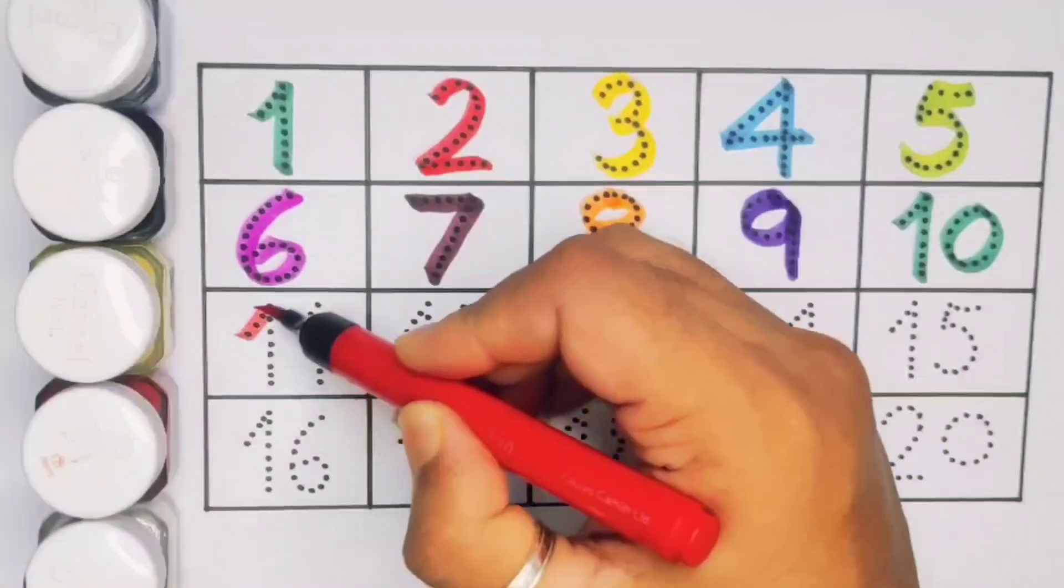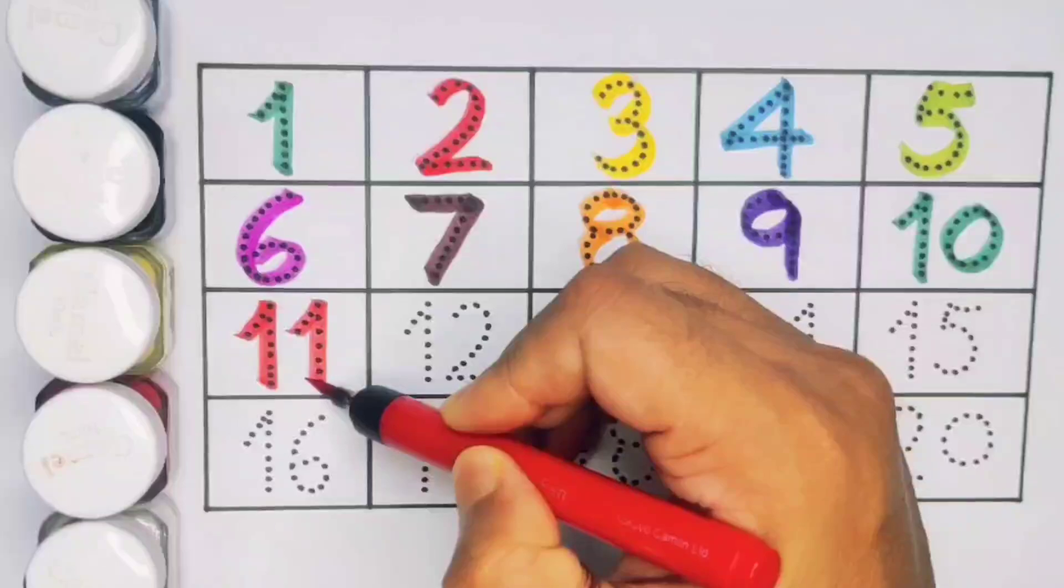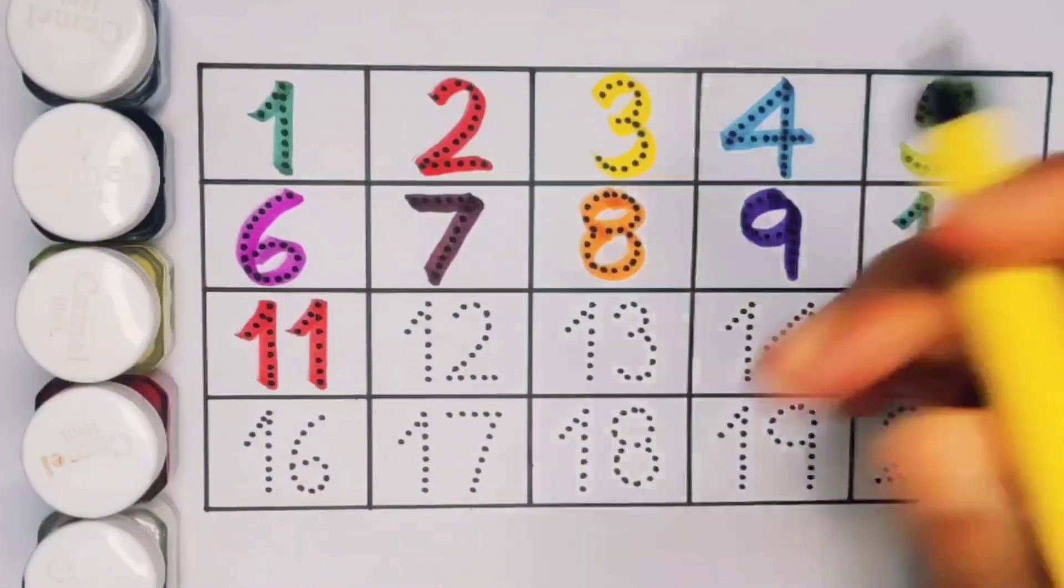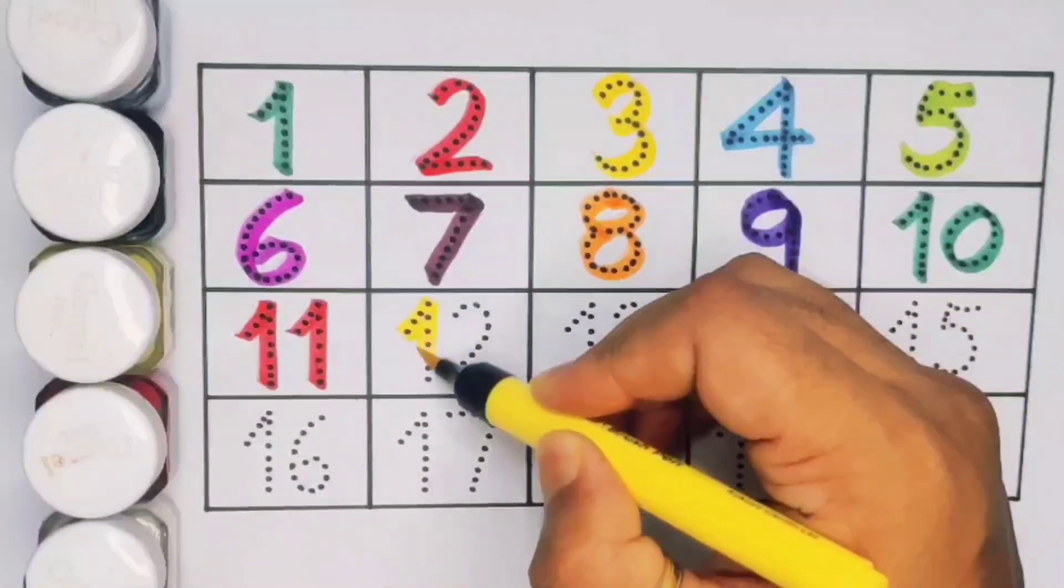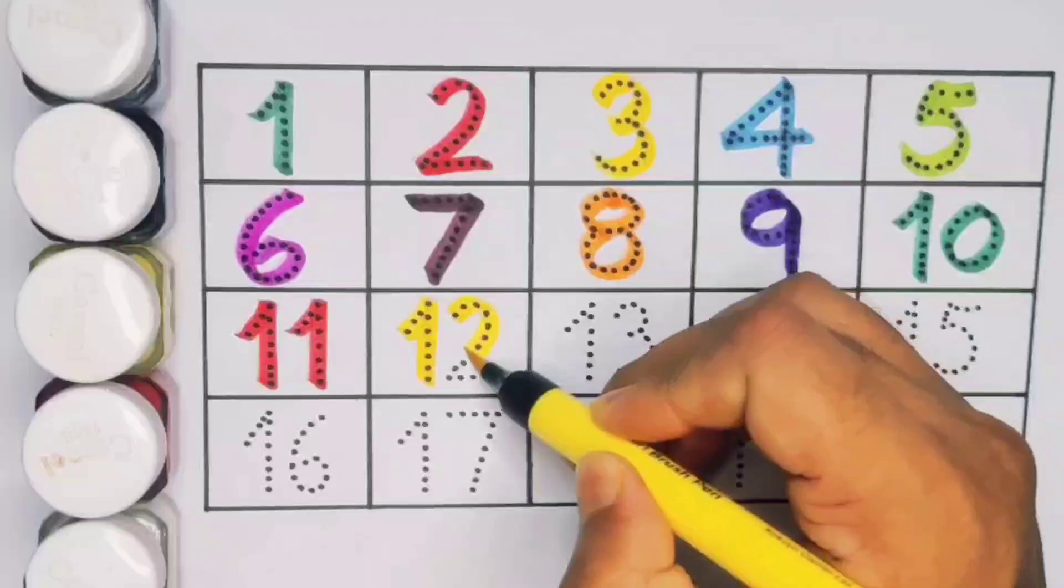Next kids 11, number 11. 1, 11, number 11. Next kids 12, 1, 2, 12, number 12.